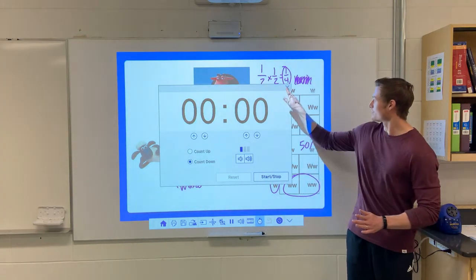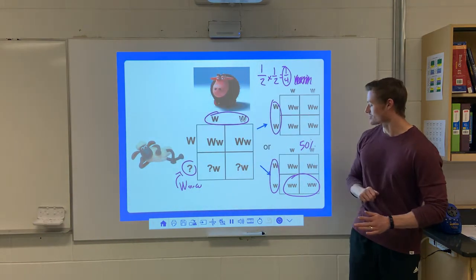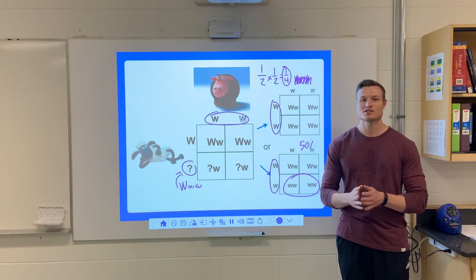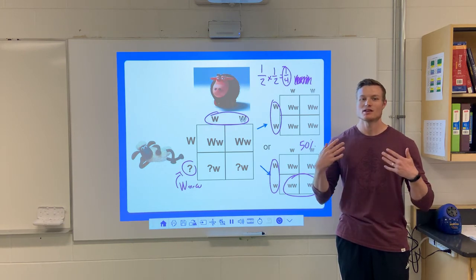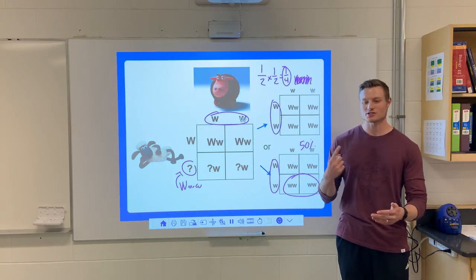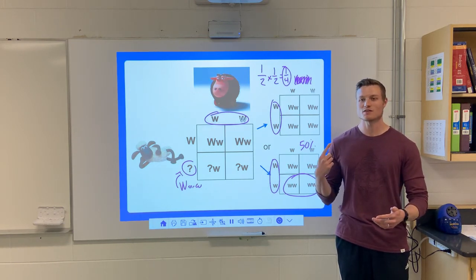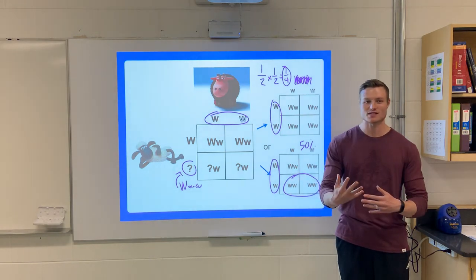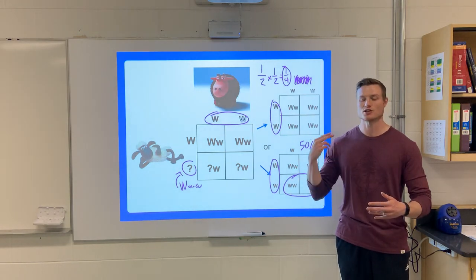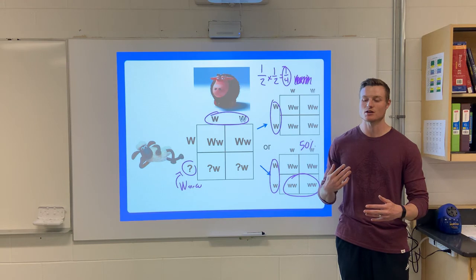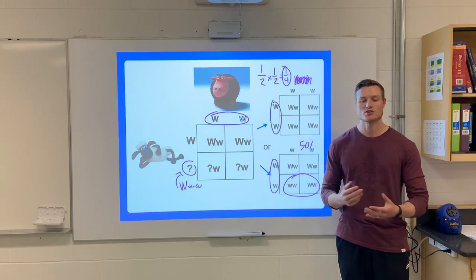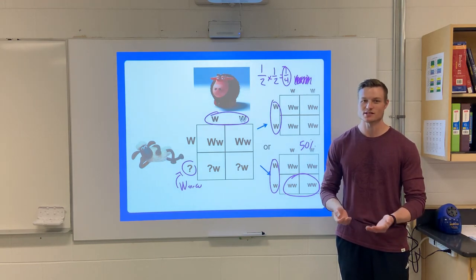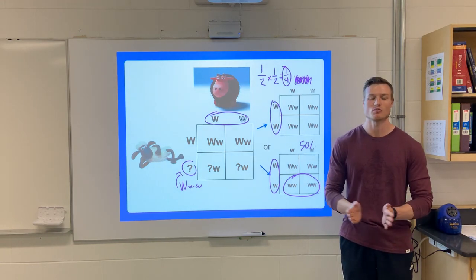That's all I have for you today. Next lesson, we are going to discuss some exceptions to the rules — what if it's not complete dominance, what if one allele doesn't mask the other? We're going to talk about co-dominance, incomplete dominance, and what happens if there's more than two alleles. Thanks again for watching and we'll chat soon.